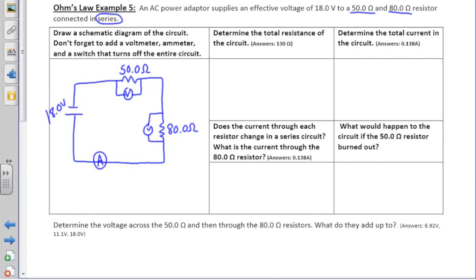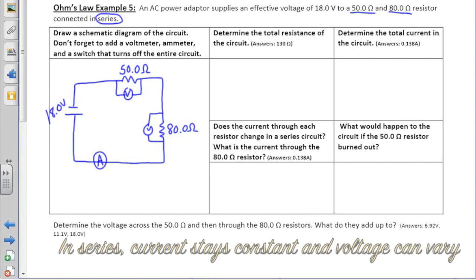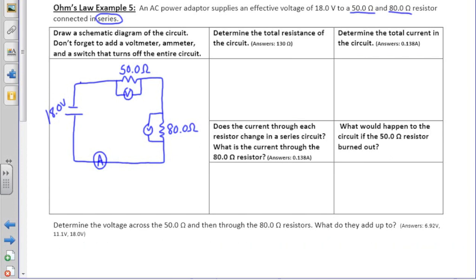Don't forget that in a series circuit, the current throughout each resistor stays the same, because there's only one path for electrons to flow, and the voltage can vary depending on our resistors. You can put the switch anywhere in the circuit, as long as the switch open will break the circuit.